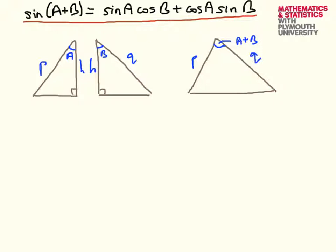The strategy we're going to take is to calculate the area of this triangle, which is clearly going to involve trigonometric functions of angle A, and this triangle as well, so we can get trigonometric functions of angle B. The sum of the areas of these two triangles is going to equal the area of this larger triangle, and that larger triangle we can work out in terms of the angle A plus B. So let's start with that and then come back to the two smaller triangles.